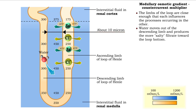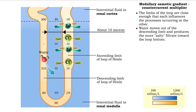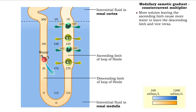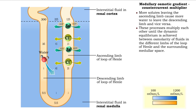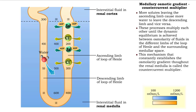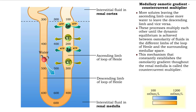As water moves out of the descending limb, a more salty filtrate is produced toward the loop bottom. In the ascending limb, the solutes pumped out of the concentrated filtrate increase the medullary osmotic gradient. As a result, more solutes leaving the ascending limb cause more water to leave the descending limb and vice versa. These processes multiply each other until the dynamic equilibrium is achieved between osmolarity of fluids in the different limbs of the loop of Henle and the surrounding medullary space. This mechanism that constantly establishes the osmolarity gradient through the renal medulla is called the countercurrent multiplier.